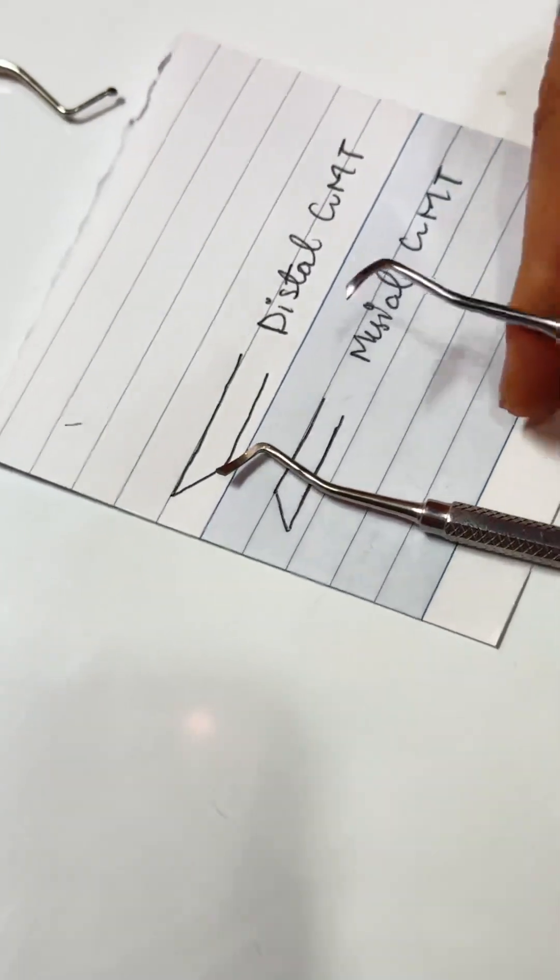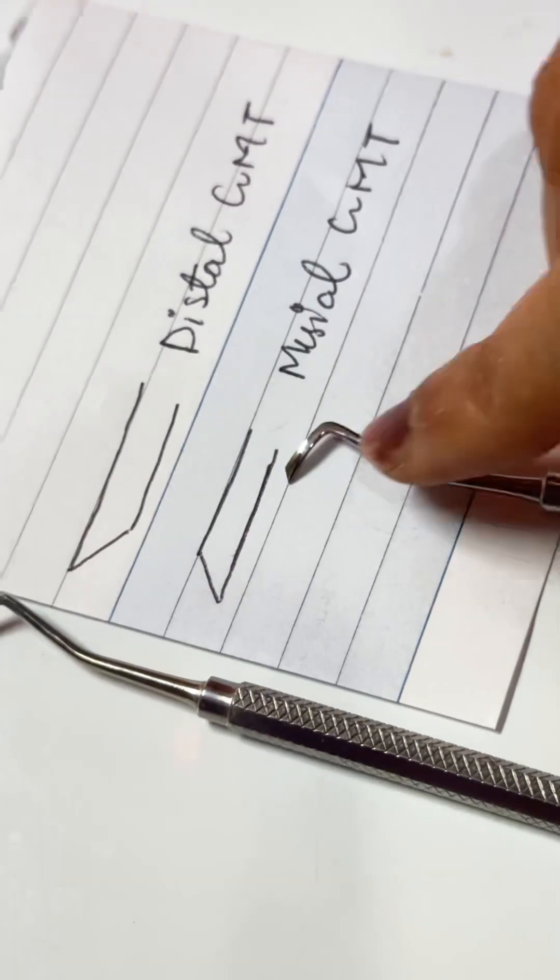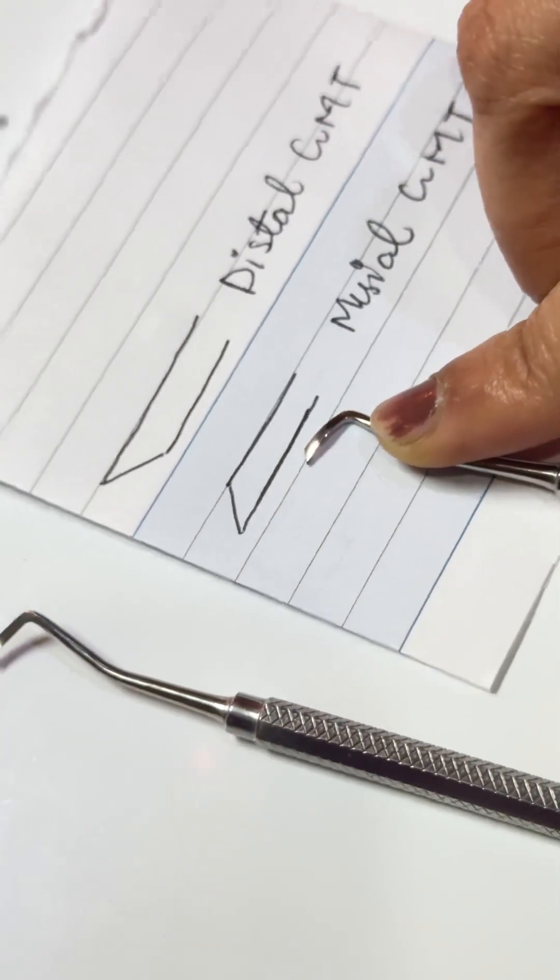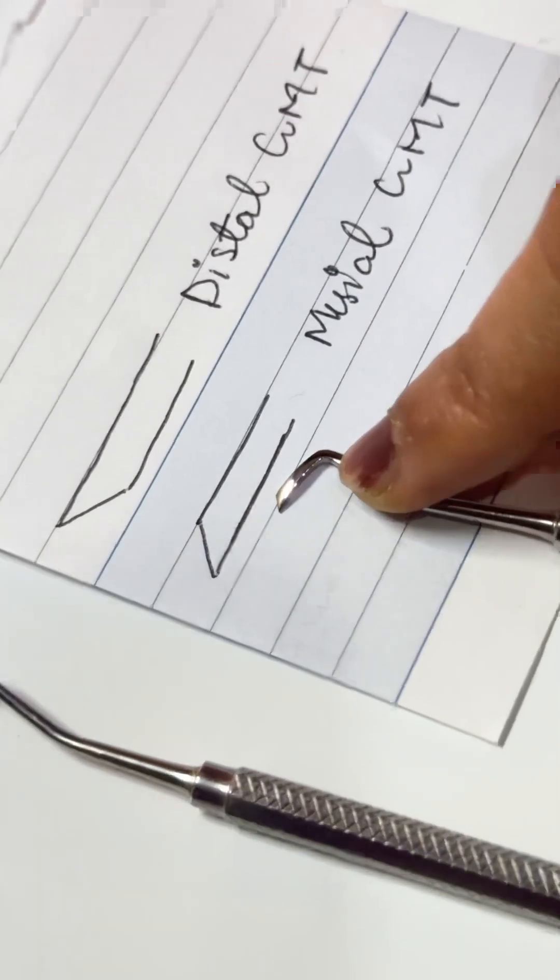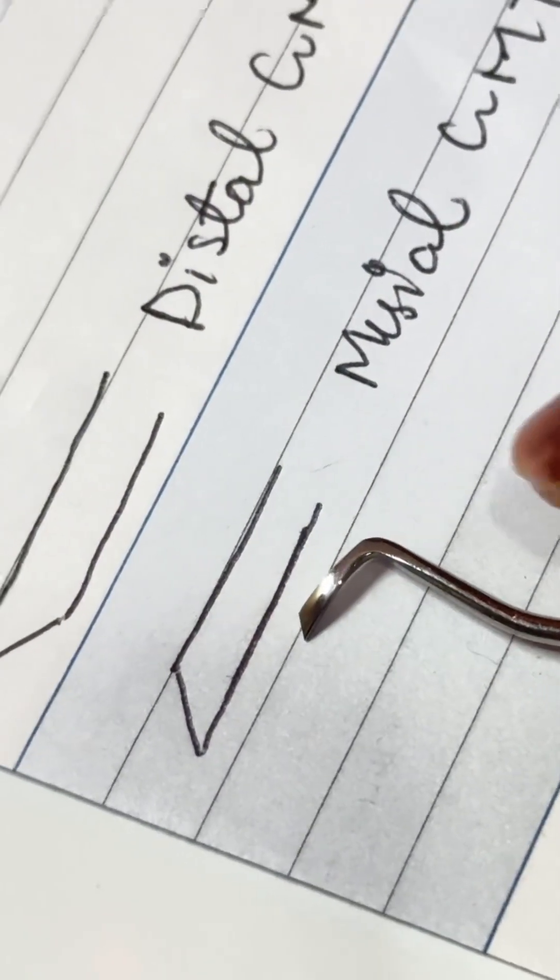And see this. Here the point is pointing downwards. As I have drawn, this is pointing downwards. So this is mesial GMT.